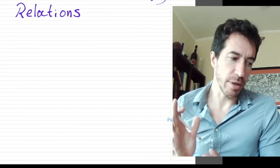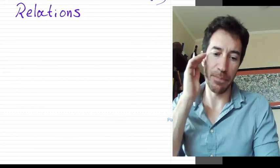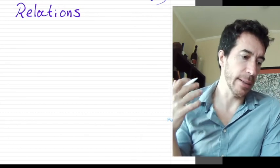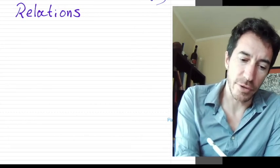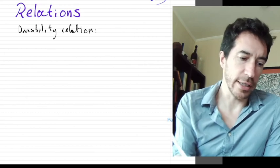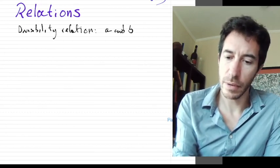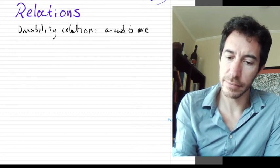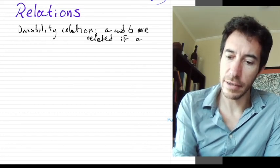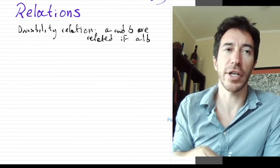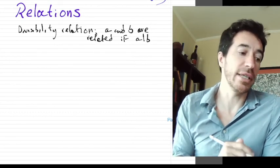So what is a relation? Let me give a couple of examples. For instance, divisibility relation. We say that A and B are related if A divides B. So it's a number that you multiply A for and you get B. That's called the divisibility relation.